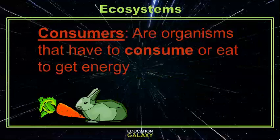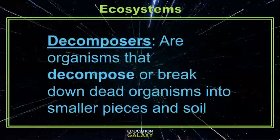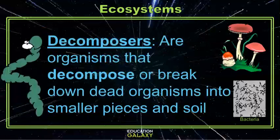Consumers are any organisms that eat to get energy. Consumers aren't just limited to eating producers or plants though — they can also eat other consumers as well, like a wolf eating a rabbit. There are even organisms that get their energy from eating dead material, and they're called decomposers, because they take dead material and decompose it into smaller pieces and soil. These are things like worms, fungi, and bacteria.